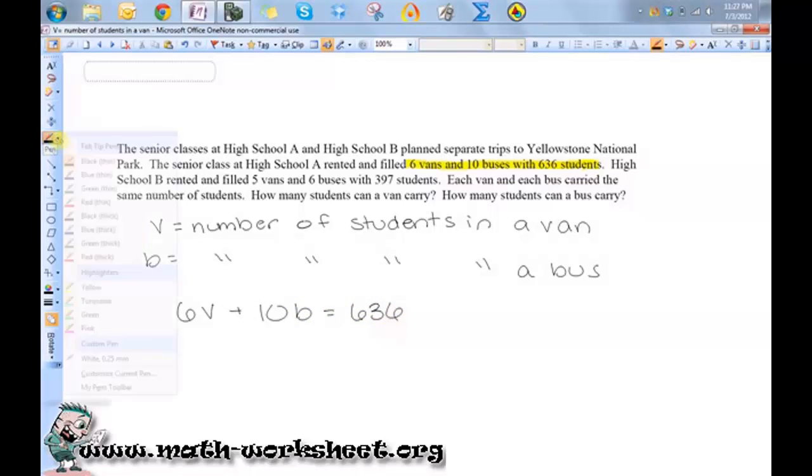Okay, so I'm going to do a similar thing for high school B. They had five vans and six buses. So 5v plus 6b equals 397 students.